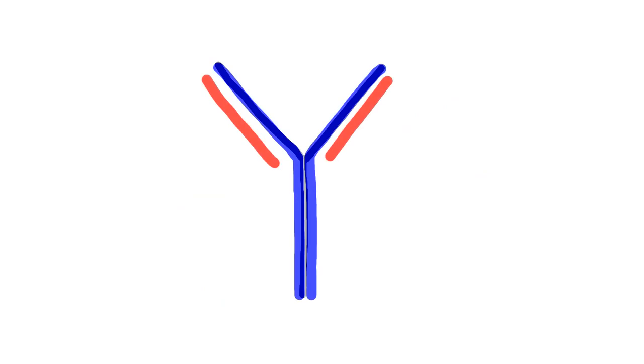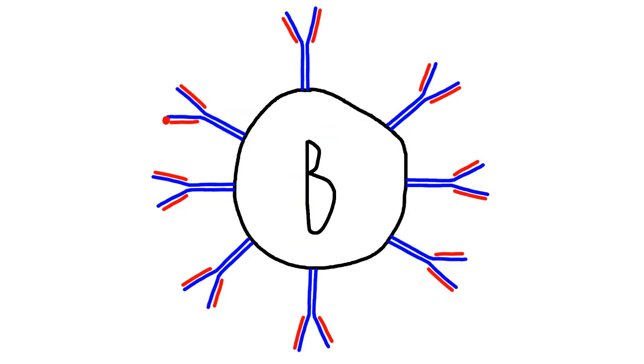B-cells have Y-shaped proteins on their surface called antibodies, which bind to specific antigens. A B-cell bound to an antigen and receiving a chemical signal from the helper T-cell begins producing more of the same antibodies.